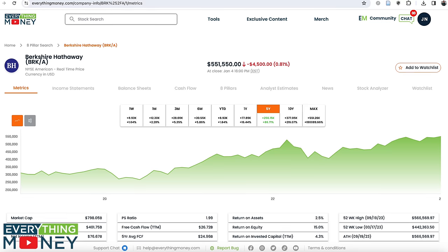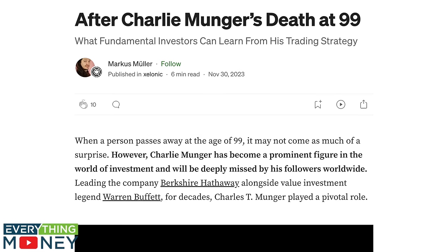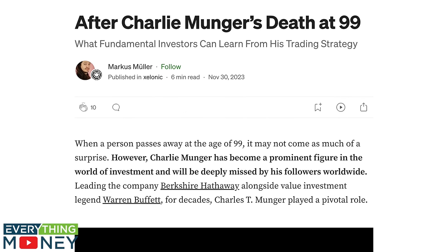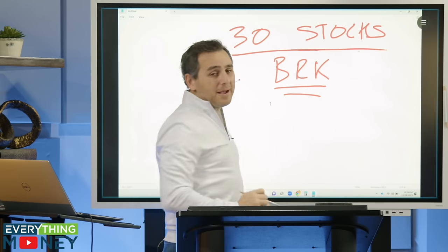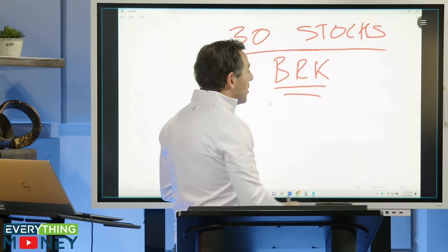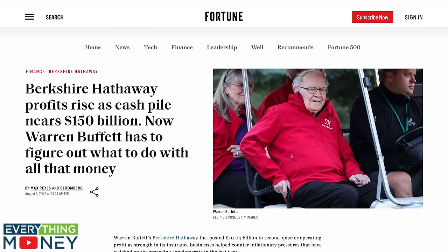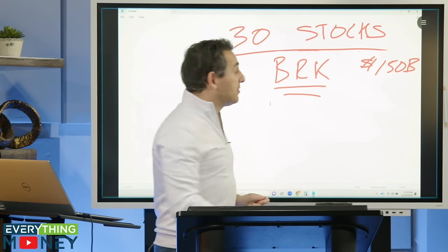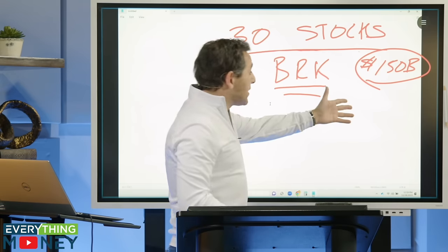Stock number seven, Berkshire Hathaway, just lost their co-founder, Charlie Munger, RIP, still run by Warren Buffett. Now guys, I'm not going to lie to you. This one I'm actually the most apprehensive about. I think they're going to do well, but it's going to be hard for them to outperform the market. But these guys are sitting on $150 billion in cash. If that doesn't tell you that the market's overvalued, the fact they're not willing to deploy all this cash, what else would?